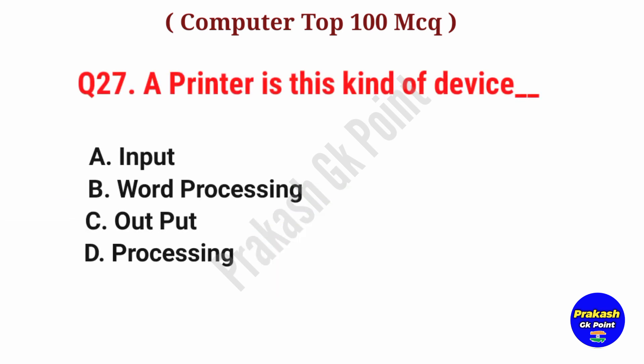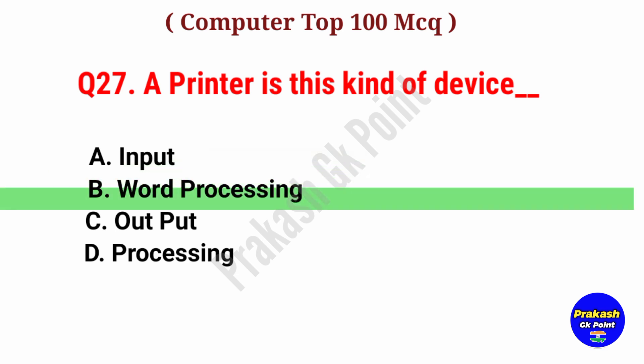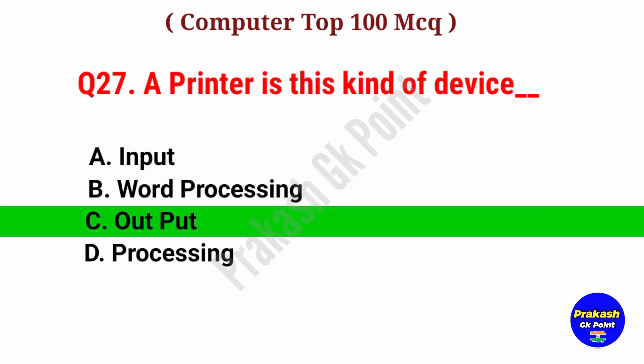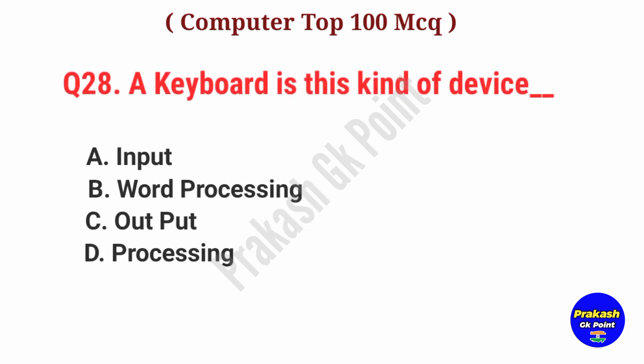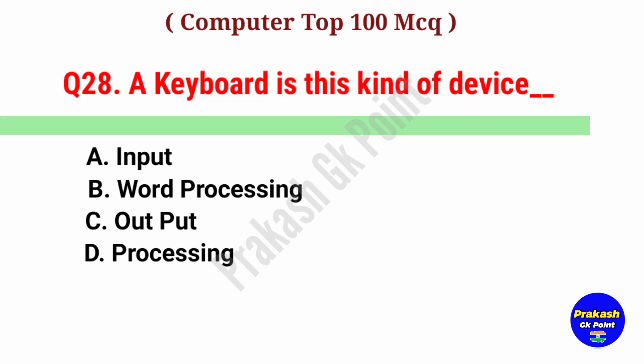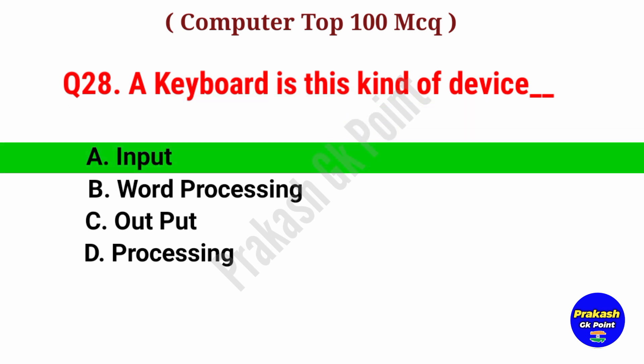A printer is this kind of device. Answer: Option C, Output Device. A keyboard is this kind of device. Answer: Option A, Input Device.